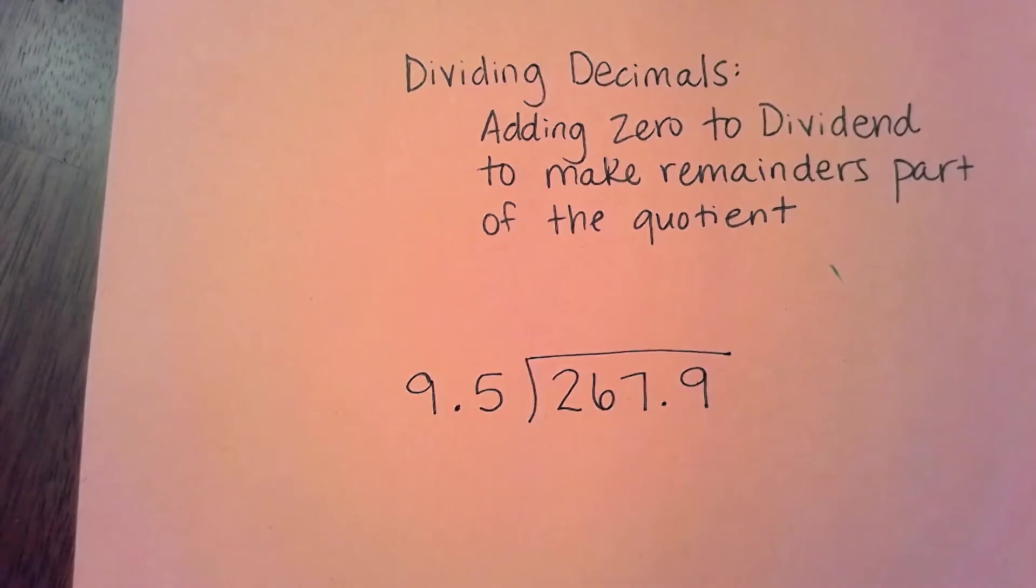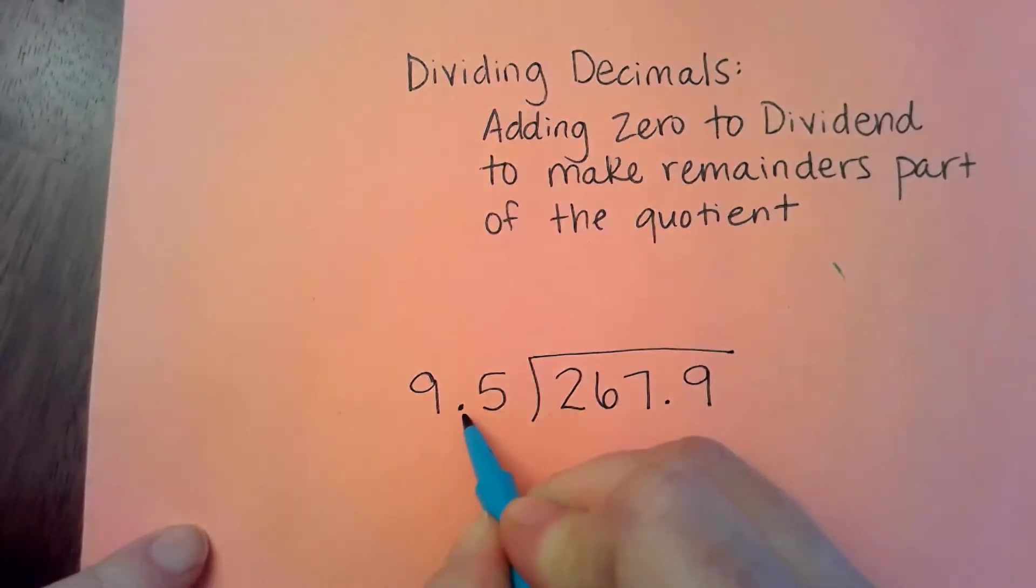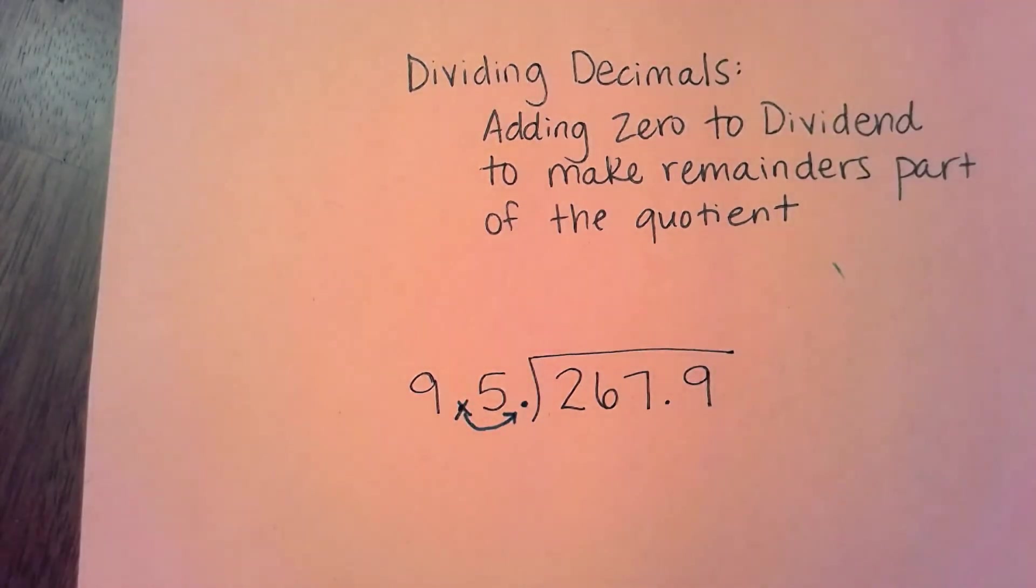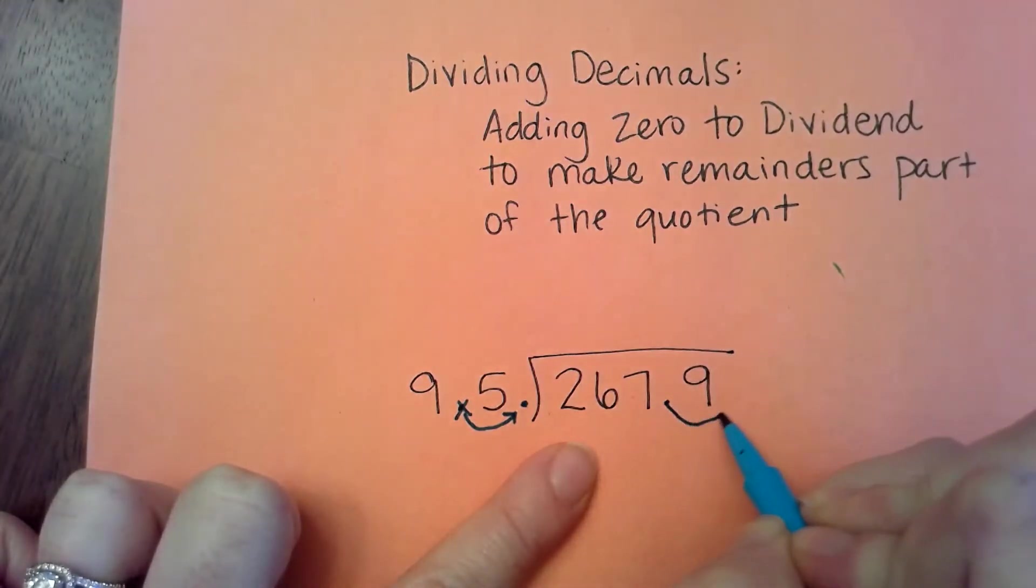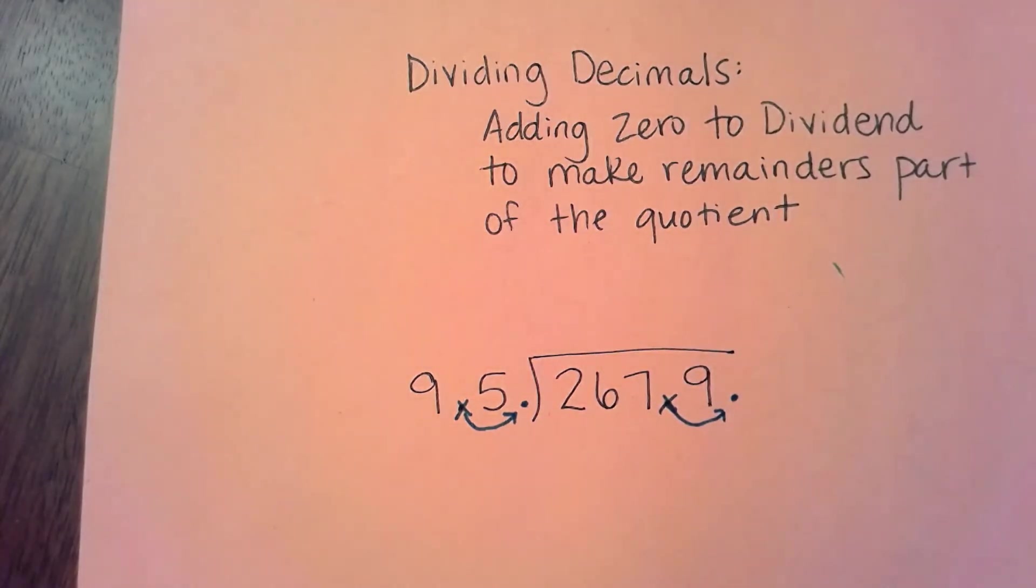I zero in on the divisor because I want to make this divisor a whole number before I start that process. If I multiply it by 10, that moves the decimal point to the right one time and that makes it 95. But whatever I do to the divisor, I must also do to the dividend. So I'm going to multiply this by 10 as well and move that decimal point one time to the right.